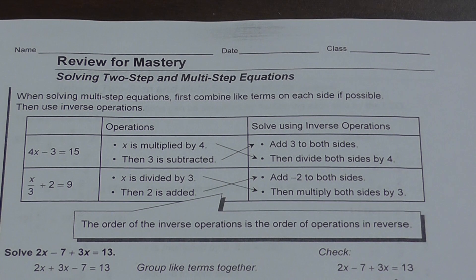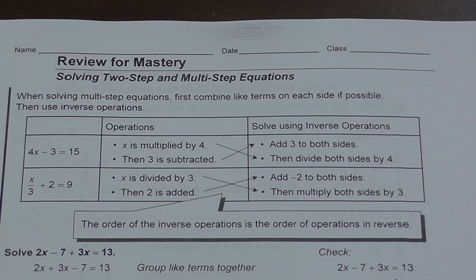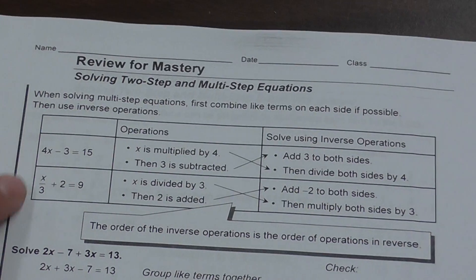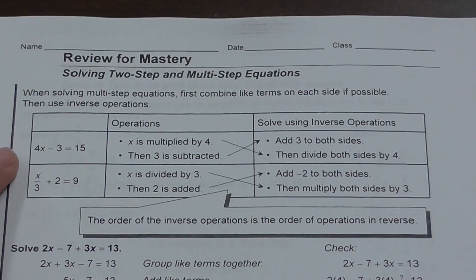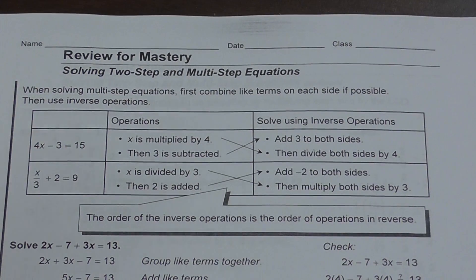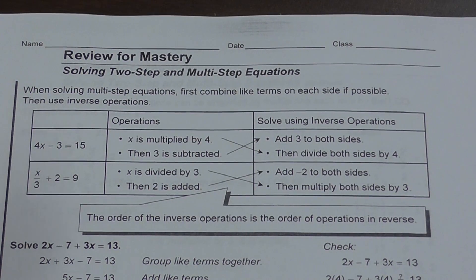This review is about solving two-step and multi-step equations. Whenever it's asking you to solve something like this, it's asking you to get x by itself — find the value of x that's going to make this sentence true. It only has one variable in it; there's not even a y anywhere in these problems. It's just: what is the value of x that's going to make this math sentence true?